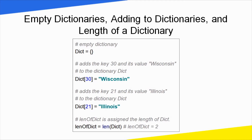How do we add values? In a list we use append, but in a dictionary we add key-value pairs directly. For example, Wisconsin equals 30. We run it — the dictionary now has dict[30] saved. Then we add Illinois equals 21. The dictionary now has Wisconsin 30 and Illinois 21 saved. That's how the empty dictionary gets values assigned to it.